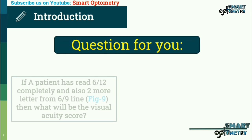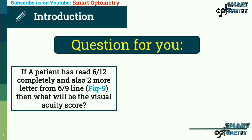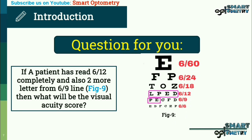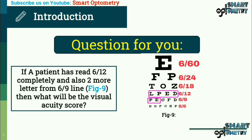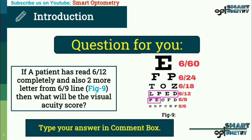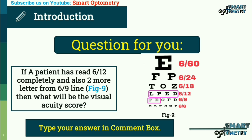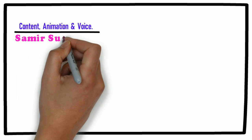Question for you: if a patient has read the 6/12 line completely and also two more letters from the 6/9 line, what will be the visual acuity score? Stay with Smart Optometry and study optometry smartly.